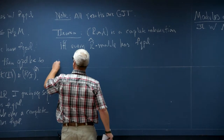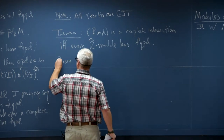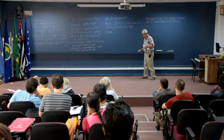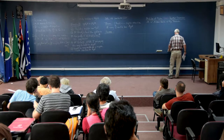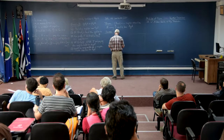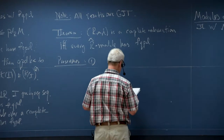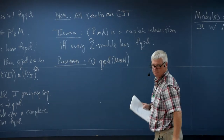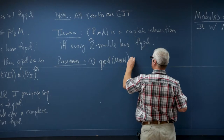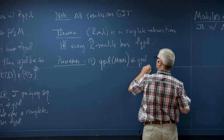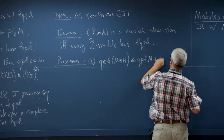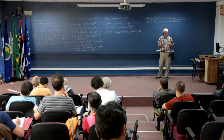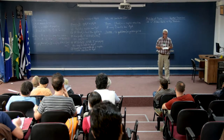Let me list several operations that preserve finite quasi-projective dimension. First, the quasi-projective dimension of a direct sum is less than or equal to the sum of the quasi-projective dimensions. So if you have two modules of finite quasi-projective dimension, their direct sum has finite quasi-projective dimension.